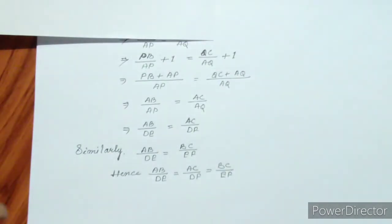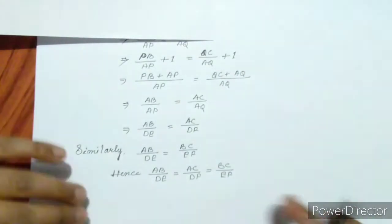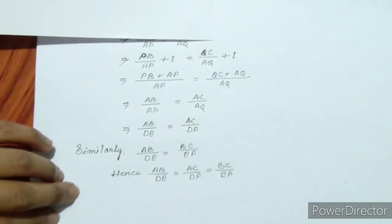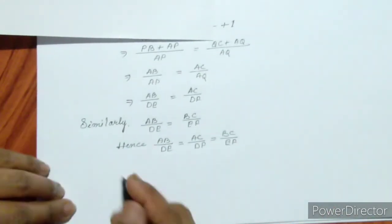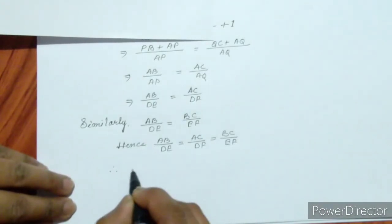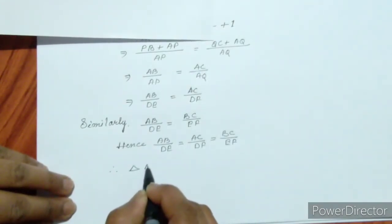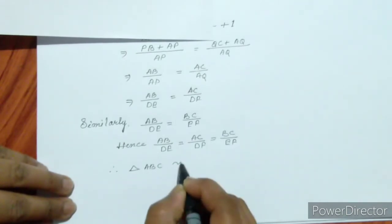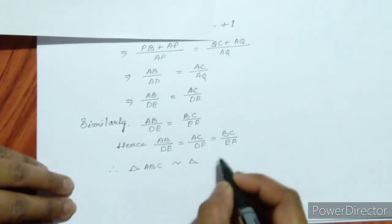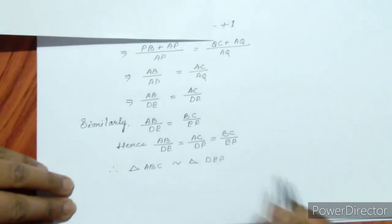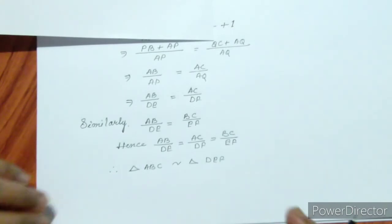Therefore, the corresponding angles are equal and the sides are proportional, so triangle ABC is similar to triangle DEF.